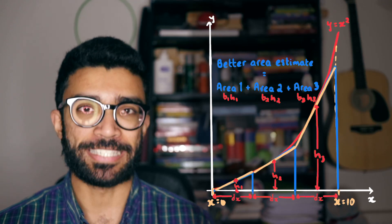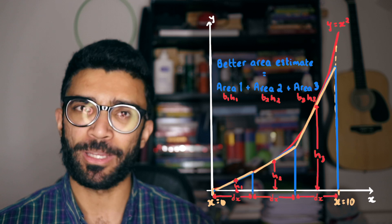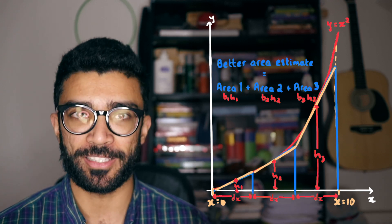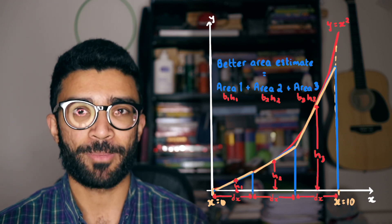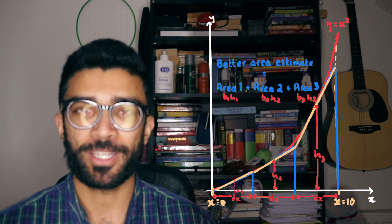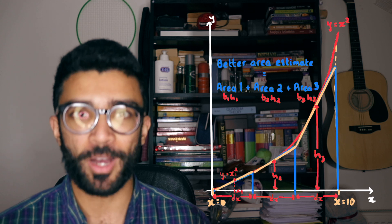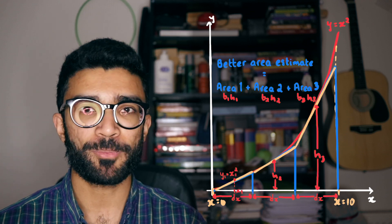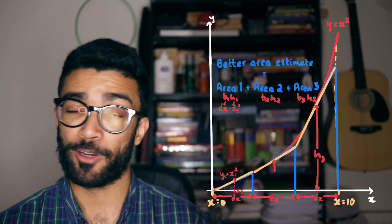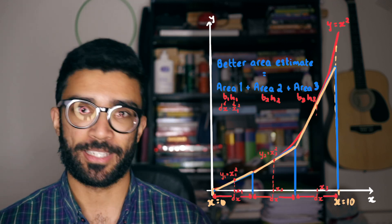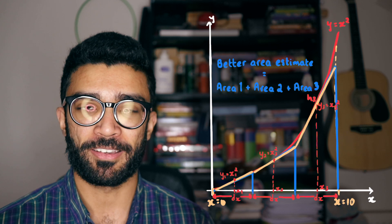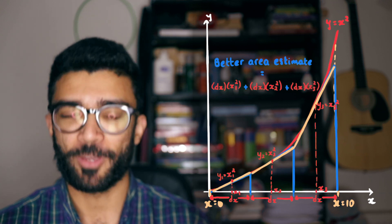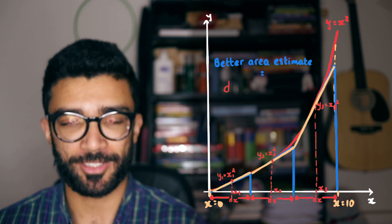We're going to call the base length of each trapezium dx. Each trapezium has the same base length dx, and we work out the middle height of each one. Because y equals x squared, the center x-coordinate of the first trapezium is x₁, so the area of the first trapezium is dx times x₁ squared. The area of the second is dx times x₂ squared, the third dx times x₃ squared, and so on. To find the total estimated area we add them all up and factor out dx, giving dx times the sum of x₁ squared plus x₂ squared plus x₃ squared, and so on.